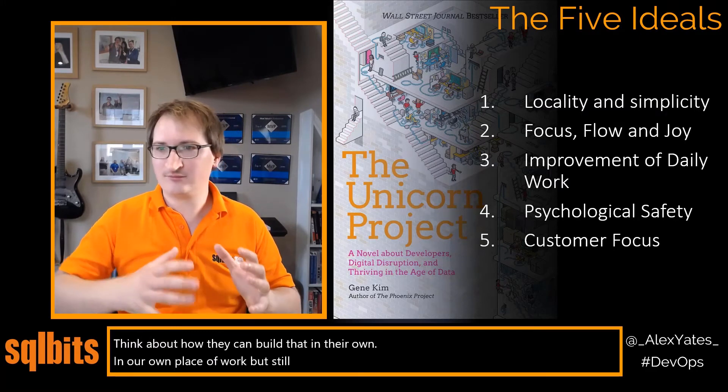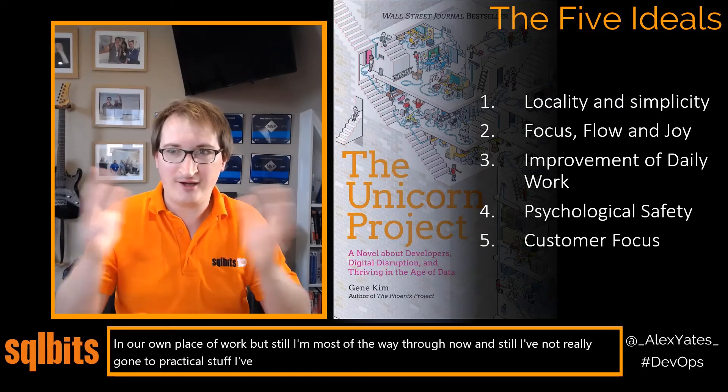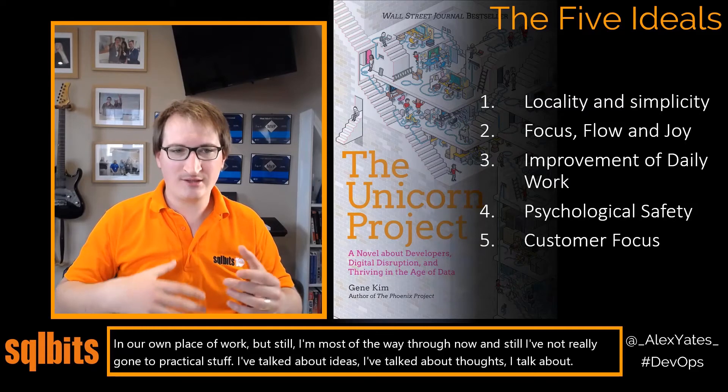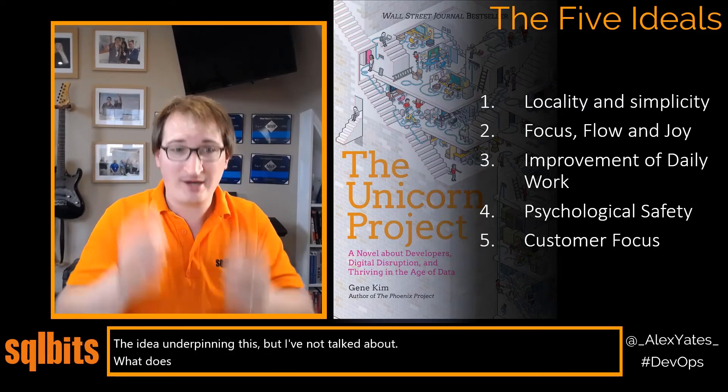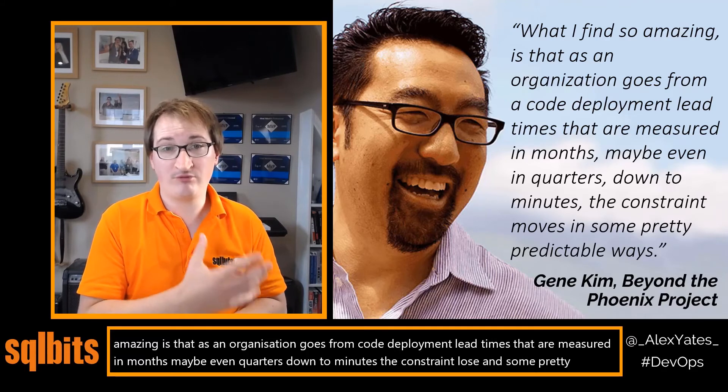Still most of the way through and I've not really got to practical stuff. I've talked about ideas and thoughts underpinning this but not what it practically means. Gene Kim, who wrote both the Phoenix Project and the Unicorn Project, says what he finds amazing is that as an organisation goes from code deployment lead times measured in months or quarters down to minutes, the constraint moves in some pretty predictable ways. Remember what Goldratt said about the constraint — there's no point doing anything other than fixing the bottleneck. He says this in an audiobook called Beyond the Phoenix Project, himself and John Willis talking through many of the ideas. I've listened through several times and got something new each time.